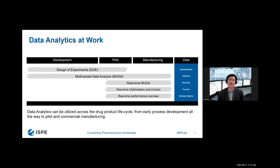On top of real-time monitoring, you may also want to optimize your process in real time — make adjustments or control it so that at the end of the operation you have an on-spec product. For large manufacturing lines with plants at different sites, C-level people want an overview of manufacturing performance. Real-time MVDA in a performance dashboard fashion is also useful for this.